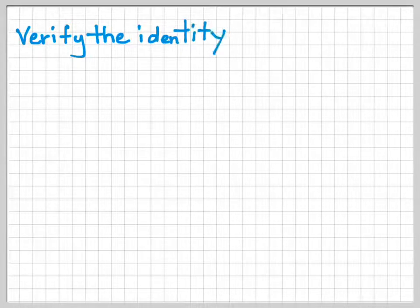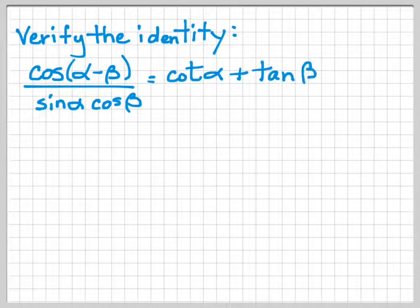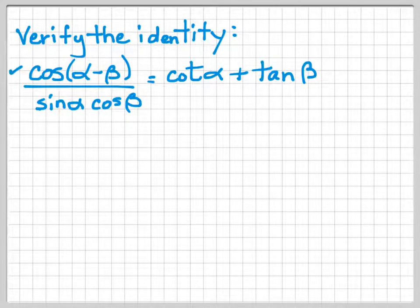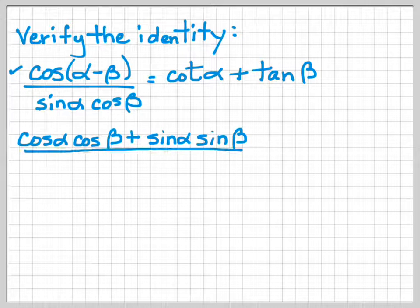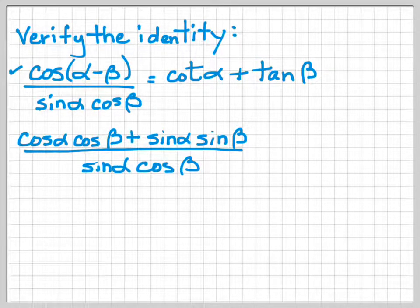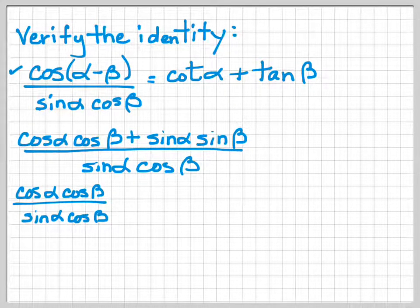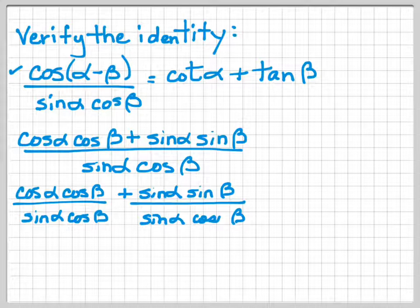Let's verify this identity. The identity is cosine of (alpha minus beta) over sine alpha times cosine beta, equals cotangent alpha plus tangent beta. We're going to choose to work on the left-hand side because we now know what the formula is for cosine of alpha minus beta. So we're going to change the numerator to cosine alpha cosine beta plus sine alpha sine beta, and our denominator is still sine alpha cosine beta. Now we're going to use a strategy of dividing these into two separate fractions: cosine alpha cosine beta over sine alpha cosine beta, plus sine alpha sine beta over sine alpha cosine beta.